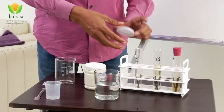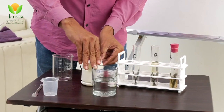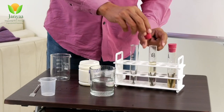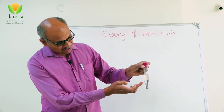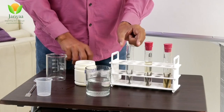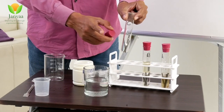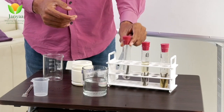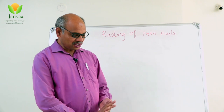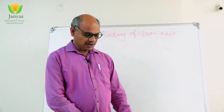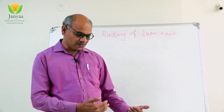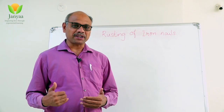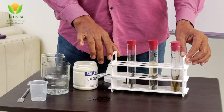So there are three conditions: in the first test tube, water and air are available. In the second test tube, nails are submerged in water only, with no air. In the third test tube, only air is available but moisture is absorbed by calcium chloride. Keep these three test tubes at a place and observe for 3 or 4 days. You can record your observations every day and note what is happening after 3 or 4 days.